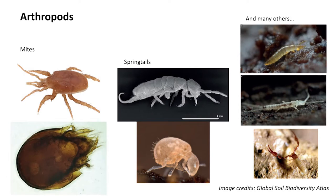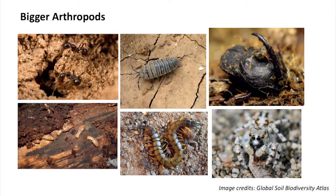As we continue to build up in size, we get into our invertebrates — small insects or arthropods like mites, springtails, and pseudoscorpions. Sometimes you can see those with your naked eye, but these are tiny invertebrates that inhabit the soil. They live alongside bigger insects like beetles, roly-polies, and even spiders. All of those different arthropods play a really important role in fragmenting plant residues — shredding and breaking them down, which speeds along the decomposition process much faster than if we just relied on bacteria and fungi.